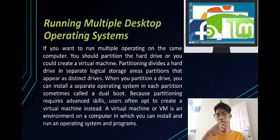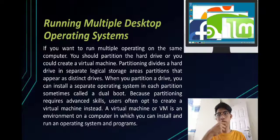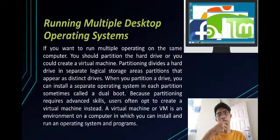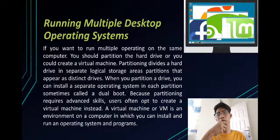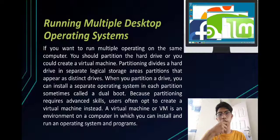Good evening everyone, my name is Christopher. Running multiple desktop operating systems: If you want to run multiple operating systems on the same computer, you can partition the hard drive or create a virtual machine. Partitioning divides a hard drive into separate logical storage areas called partitions that appear as distinct drives. You can install a separate operating system in each partition — sometimes called a dual boot. Because partitioning requires advanced skills, users often opt to create a virtual machine instead. A virtual machine, or VM, is an environment on a computer in which you can install and run an operating system and programs.